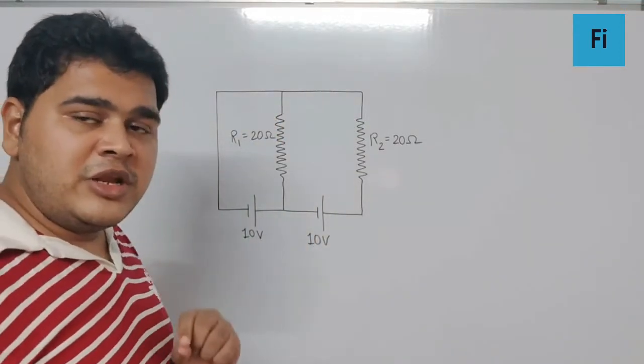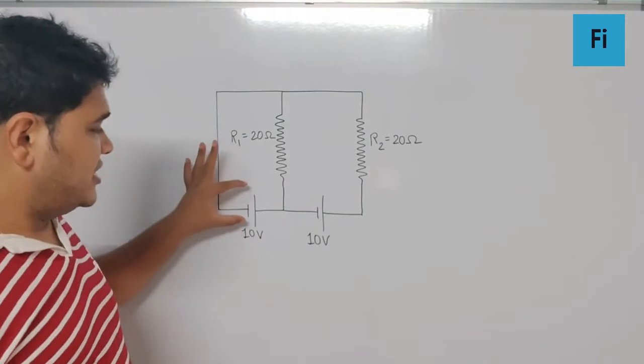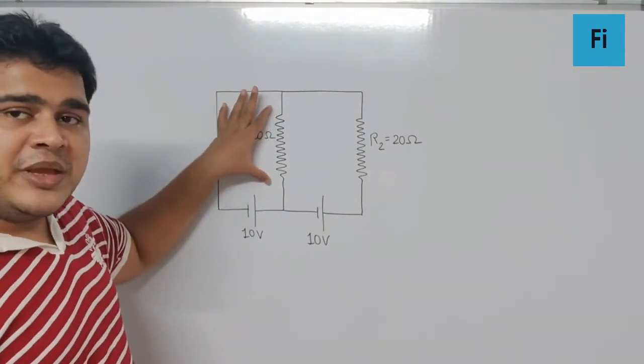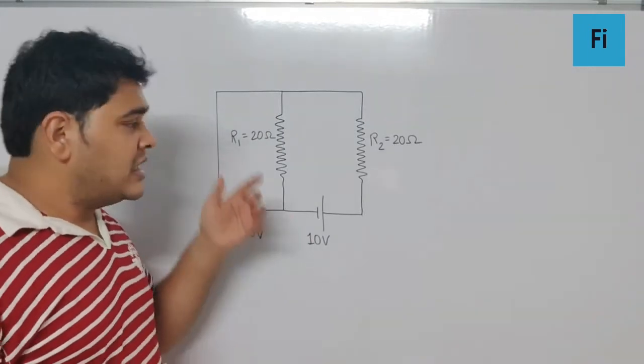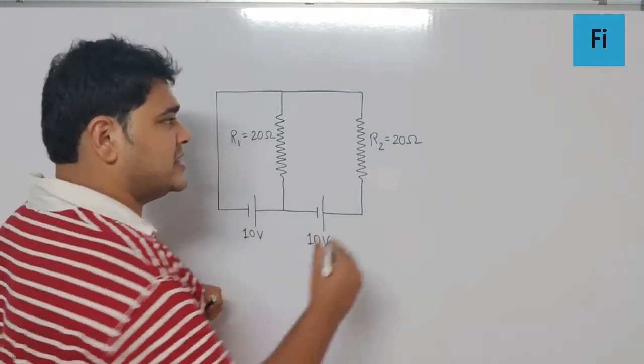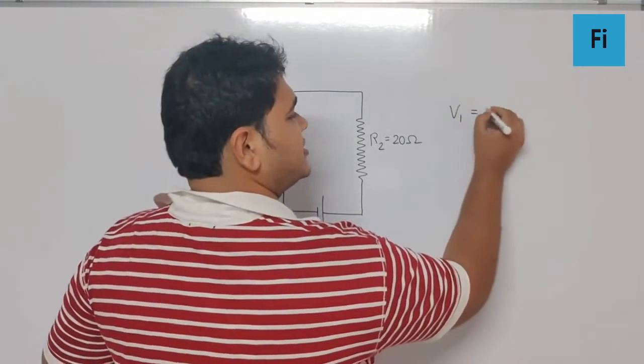Now one thing we need to understand is this battery is directly connected to this resistance, which means the potential difference across this resistance R1 is going to be 10 volt. So I can say V1 is 10 volt.